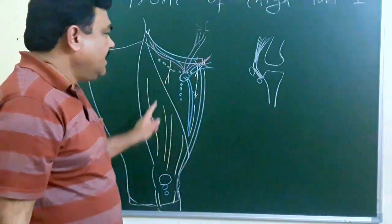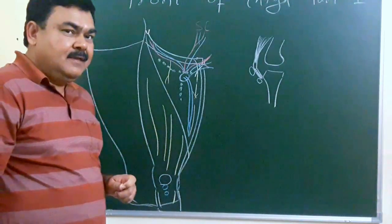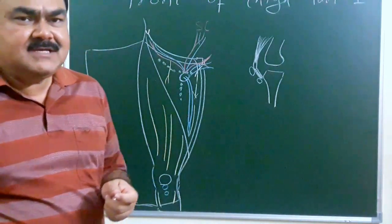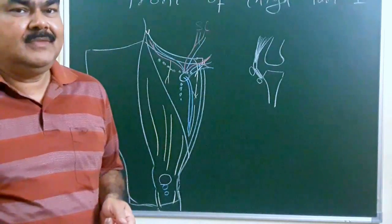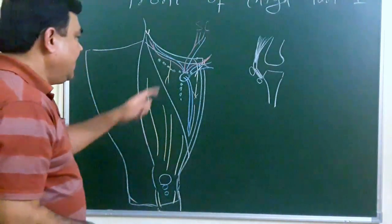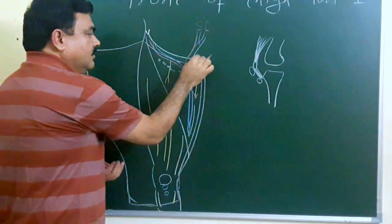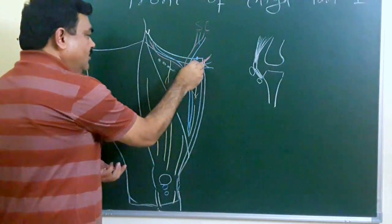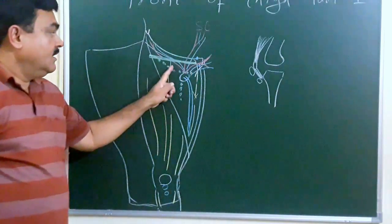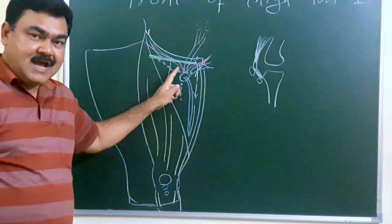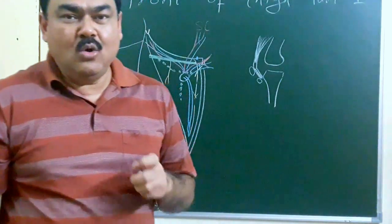These structures are present in the superficial fascia. After removing the superficial fascia, you will find the deep fascia. The deep fascia is loosely attached to the superficial fascia, except in some places. About 8 cm below the inguinal ligament, below the pubic tubercle, the membranous layer of the superficial fascia and the deep fascia are firmly adherent to each other. This is known as Holden's line.